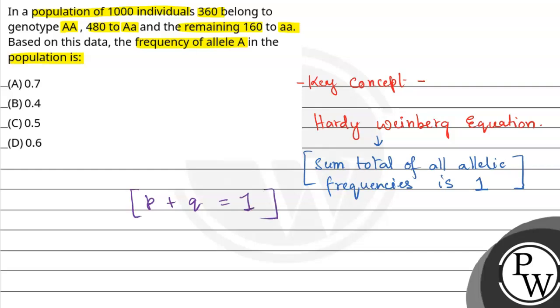Here, p denotes the dominant allele and q denotes the recessive allele. According to the principle, sum total of all allelic frequencies, that is both dominant and recessive, will be equal to 1.